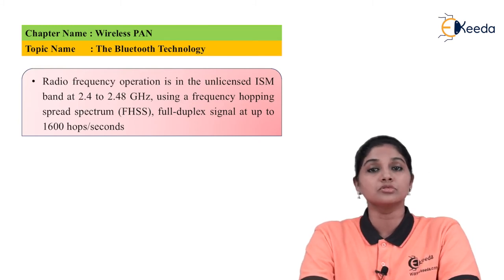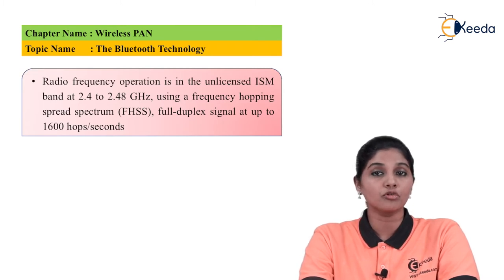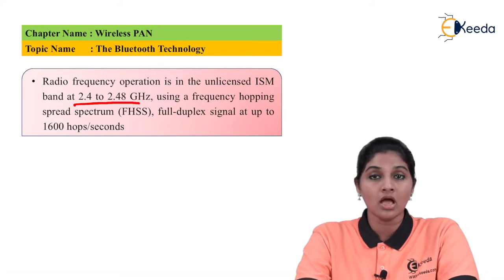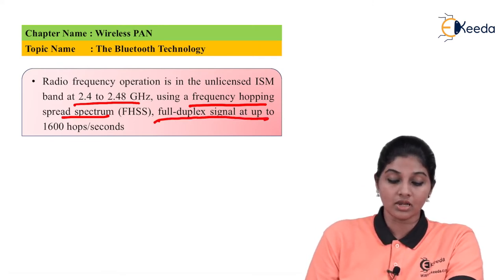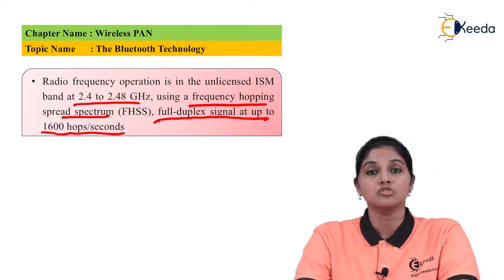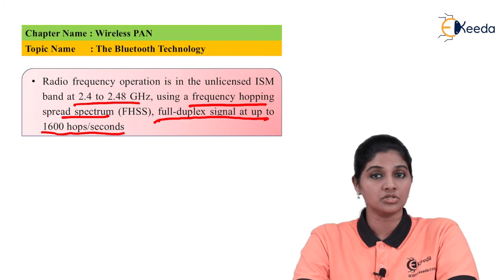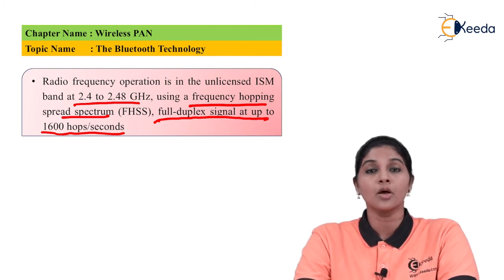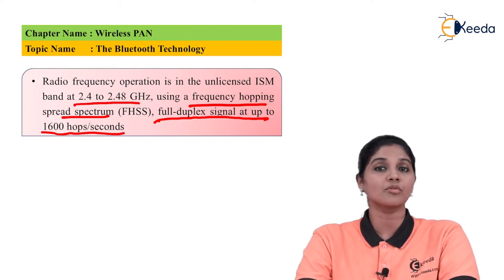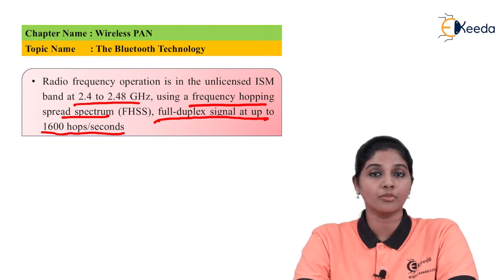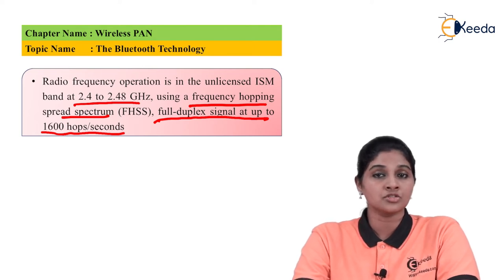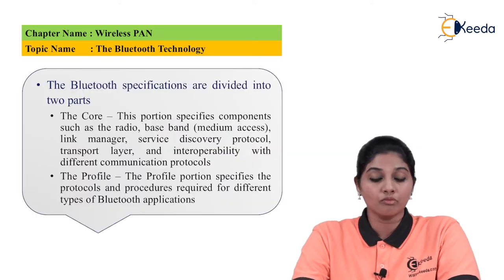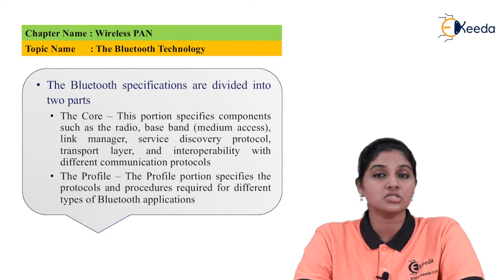The frequency band used by Bluetooth is the unlicensed ISM band at 2.4 to 2.48 GHz. It uses Frequency Hopping Spread Spectrum (FHSS) as a modulation technique and full-duplex signaling at up to 1600 hops per second. Since the frequency is unlicensed, anyone can use it without a special license. However, one drawback is interference from other household equipment like cordless phones and microwave ovens that also operate at the same frequency.